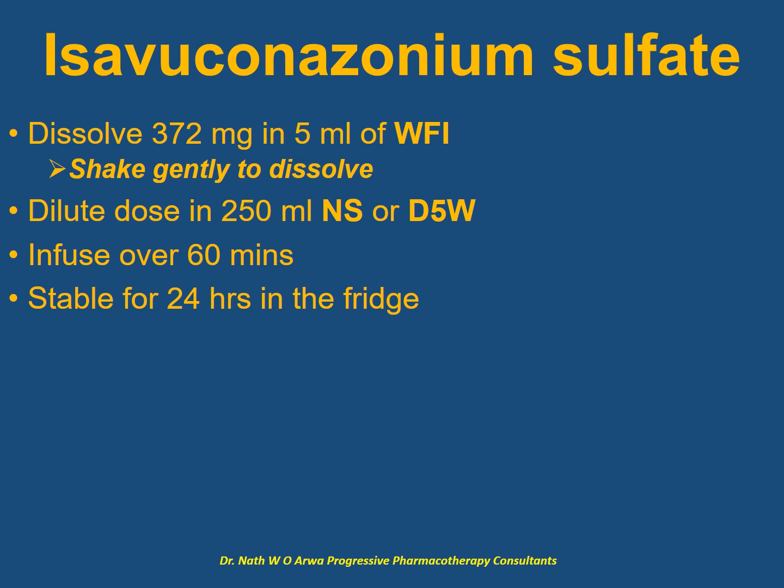For isavuconazonium sulfate, a prodrug of isavuconazole, dissolve each 372 mg vial in 5 ml of water for injection. Avoid vigorous shaking due to foaming — swirl gently until the powder dissolves. The prescribed dose should be further diluted in 250 ml of normal saline or dextrose 5%. The resultant IV solution should be infused over an hour, and it remains stable for one day in the fridge.